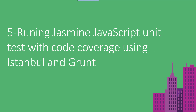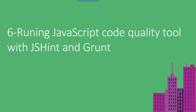In the next video, we will see how to calculate code coverage using Istanbul and how to embed the code coverage configuration inside the Jasmine unit testing task, all using the Grunt configuration. After that, we will see how to use code quality tools with JSHint, configure that with Grunt, and run it as well.